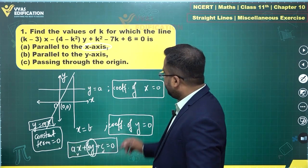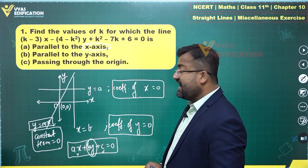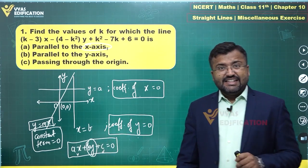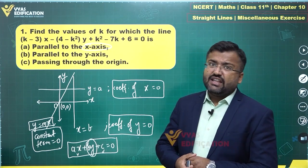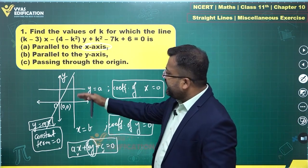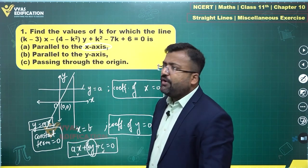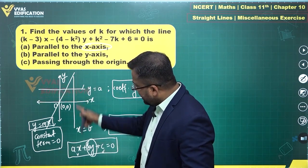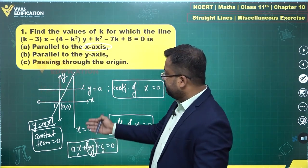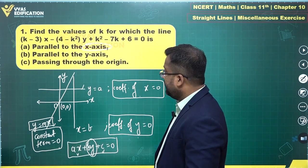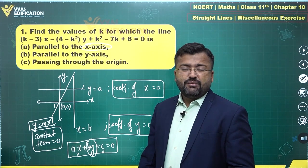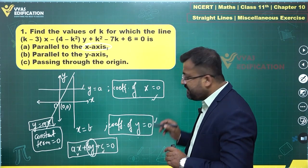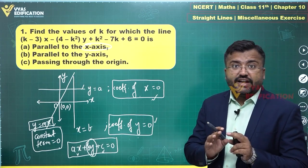To summarize: for a line passing through the origin, the constant term is 0; for a line parallel to the x-axis, the coefficient of x is 0; for a line parallel to the y-axis, the coefficient of y is 0. You can also use the slope approach — slope = 0 for parallel to x-axis, and slope undefined for parallel to y-axis — and you'll arrive at the same conditions.